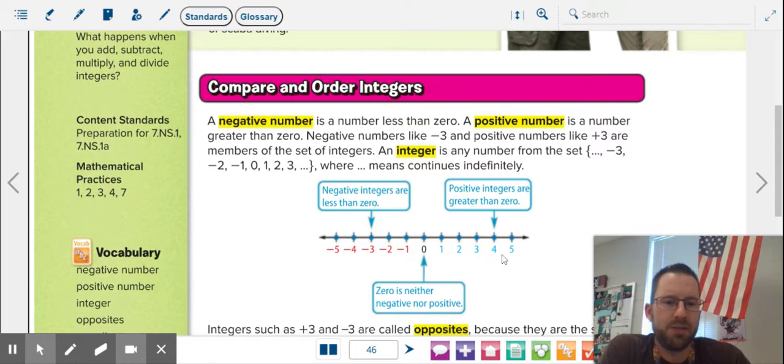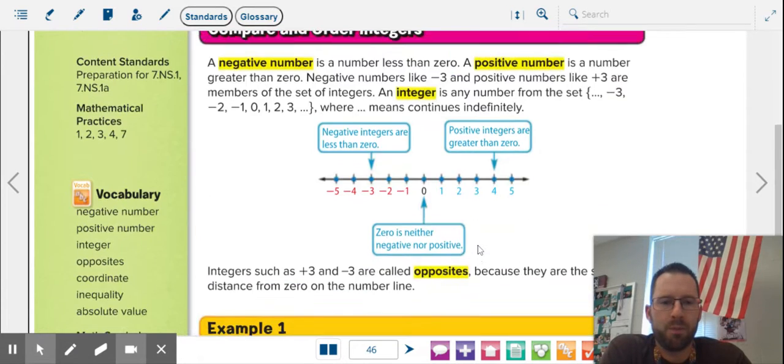Integers, by definition, are positive and negative whole numbers. No decimals, no fractions. They're nice and easy to compute with because they are easy to add. Now, when you have two numbers that are exactly in the same spot on different sides of the number line, they're called opposites, like three and negative three. If you add opposites together, they cancel out and become zero.